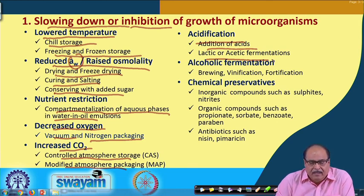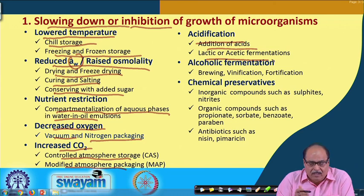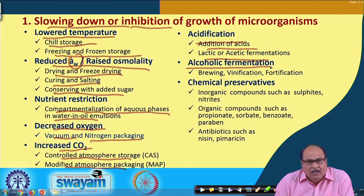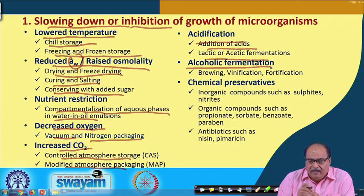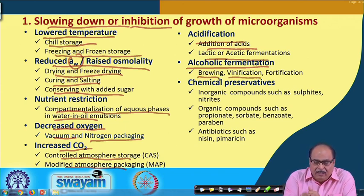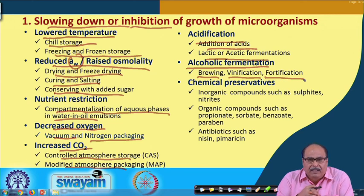Not many spoilage microorganisms are able to survive under higher alcoholic concentrations — more than 14 or 16 percent alcohol. Another set of technologies used for slowing down or inhibiting microbial growth involves increasing the alcohol content in food or beverages. Many fruit juices have been preserved traditionally by vinification, or conversion of malt into beer, and by using appropriate fortification technologies one can increase the alcohol content of the material.